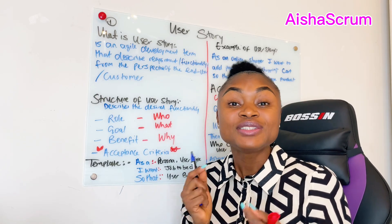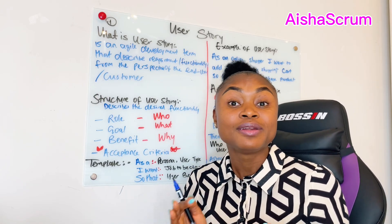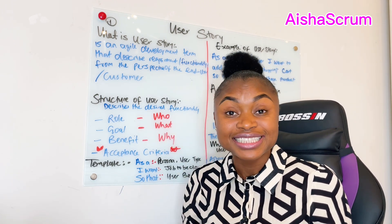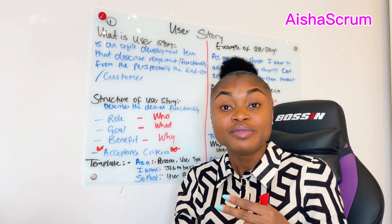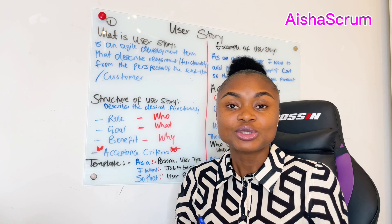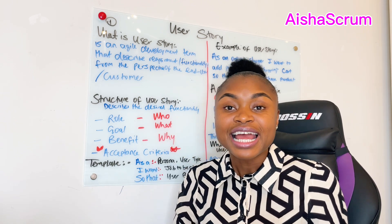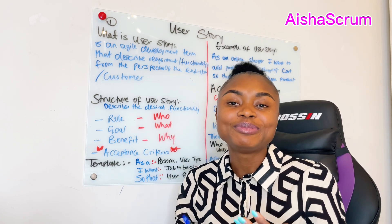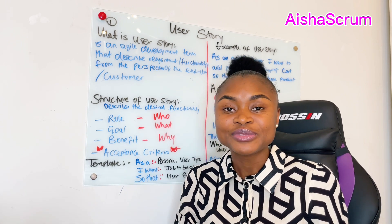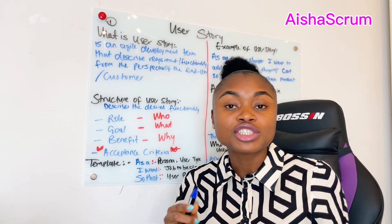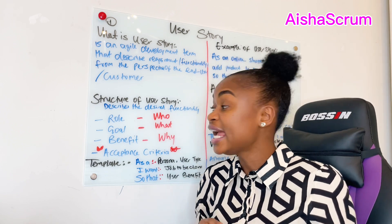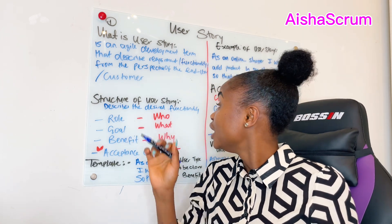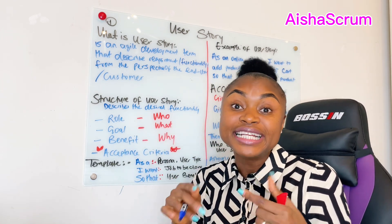What is a user story? A user story is an agile software development term that describes the required functionality needed coming from the end user and the customer. It describes what is needed and why it is needed, telling you, the builder, how you can develop this functionality to fit the end user. There are different structures of a user story, and the main popular one is a template that describes the required and desired functionality.